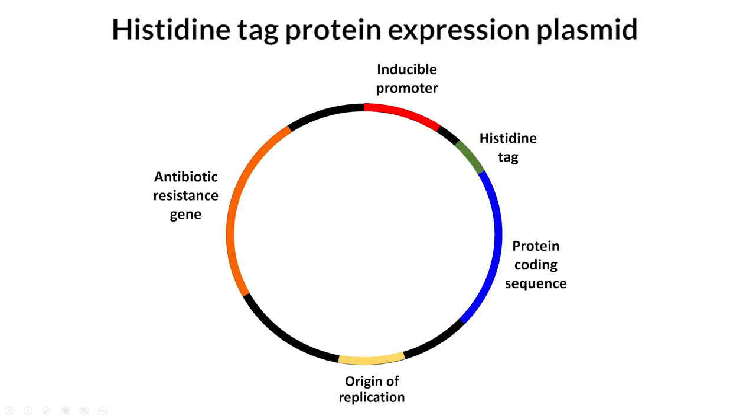The plasmid contains at least three domains. These encode antibiotic resistance, an inducible promoter, and our protein of interest. The antibiotic resistance allows us to select the bacteria carrying our plasmid, and the inducible promoter allows us to choose when our protein of interest is expressed.